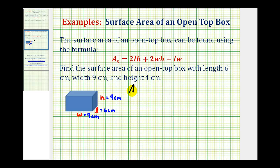So the surface area of our box, or A sub S, is going to be equal to 2 times L times H, where L is 6 centimeters. I'll leave out the units until the end. And H is 4, plus 2 times W times H, where W is 9 centimeters, and H is 4 centimeters. Plus L times W, where L is 6 centimeters, and W is 9 centimeters.